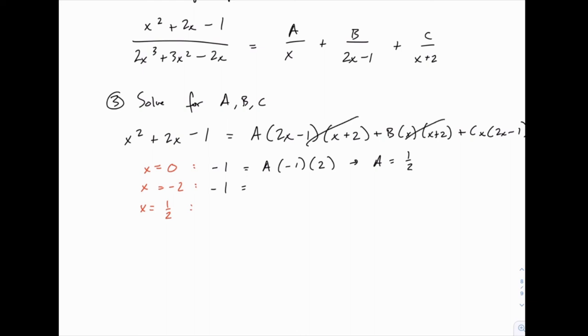So we'll just have C times negative 2 times 2 times negative 2 minus 1, or negative 5. So negative 1 equals 10 times C, or C equals negative 1/10.